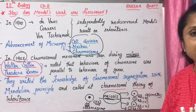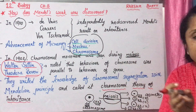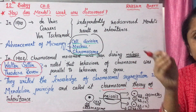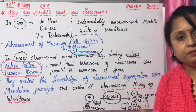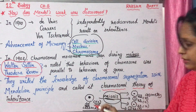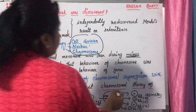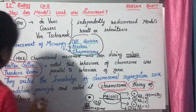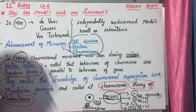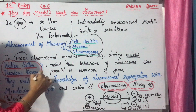Sutton and Boveri combined the knowledge of chromosomal segregation with Mendel's principles and proposed a theory. That theory is nowadays known as — most important — the Chromosomal Theory of Inheritance. Who gave this theory? Walter Sutton and Theodore Boveri.